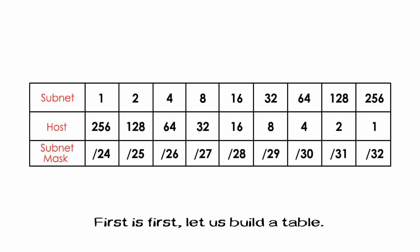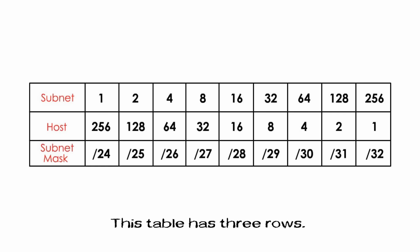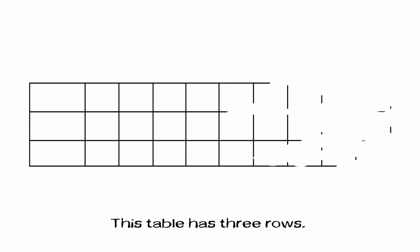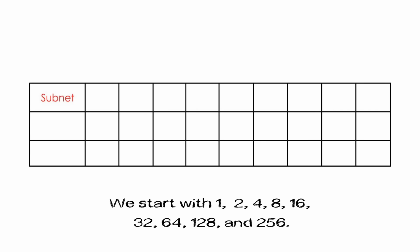Let's build a table. This table is the most critical, because once we build it, we can easily solve most subnetting questions. This table has three rules. The first row is subnet, with nine numbers. We start with 1, then 2, 4, 8, 16, 32, 64, 128, and 256. The pattern is each number is double its previous number.